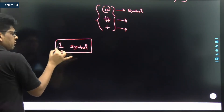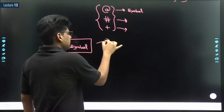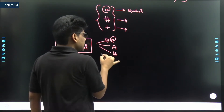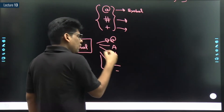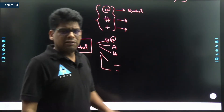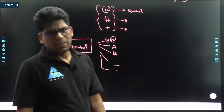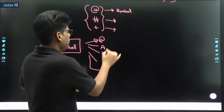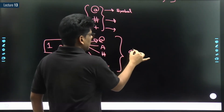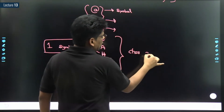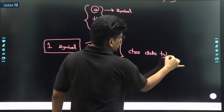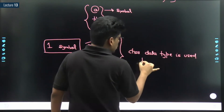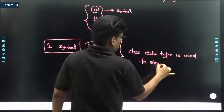Any symbol - whether it is at the rate (@), hash (#), underscore (_), minus (-), or any symbol that appears on the keyboard. If we want to store one symbol, the char variable or char data type is used to store one symbol.